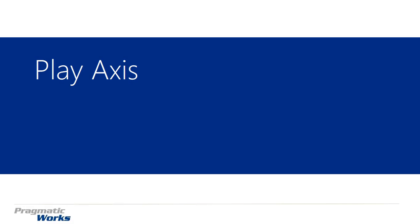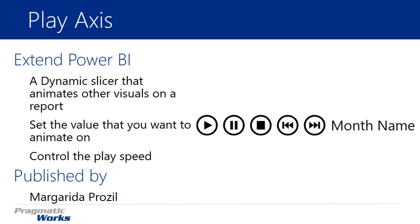Welcome back to the Power BI custom visuals course. In this module we're going to be looking at the play axis. The play axis is a really interesting visual that you can use to enhance the rest of your report inside of Power BI. It's a type of dynamic slicer that lets you animate all of the other visuals on your report — kind of like a slicer but one that you can animate with a play button, toggling through different values within a particular attribute. You can set whatever value you want and even control the playback speed.